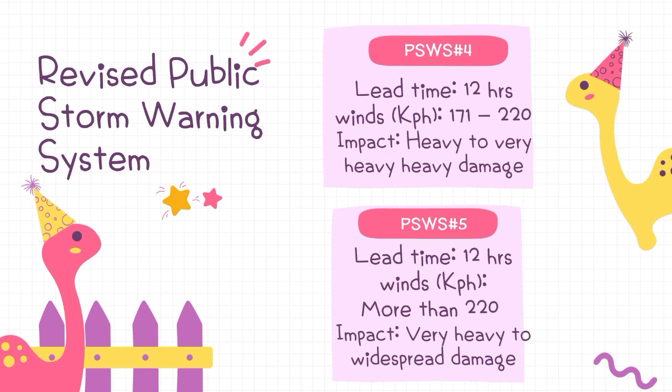PSWS #5 — lead time of 12 hours, wind speed of greater than 220 kilometers per hour, impact: very heavy to widespread damage.